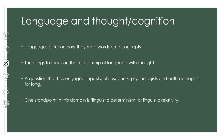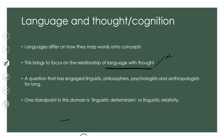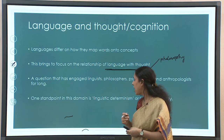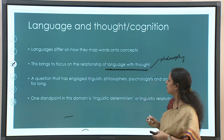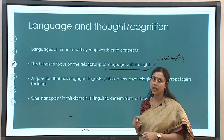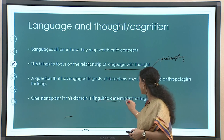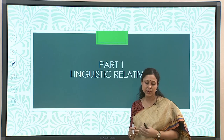This brings us to the question of language and thought. When we talk about the relationship of language and thought, this is not merely a linguistic question — it is also a very important question in philosophy. Philosophy has long been concerned with how language and thought are connected. However, we are not going into philosophy here. As far as we are concerned, the primary focus from a linguistic perspective has been on what is called linguistic determinism or linguistic relativity. These two terms refer to the same aspect.